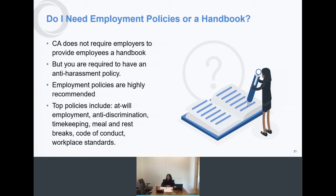The top policies we recommend include an at-will employment policy — a reminder that either the employer or employee may at any time, with or without cause, end the employment relationship — and an express written change clause stating that the at-will agreement cannot be altered except by express written authorization by an authorized representative of the company. We also recommend an anti-discrimination and retaliation policy, policies around meal and rest breaks, a code of conduct outlining how employees are expected to treat each other and handle complaints, and workplace standards.